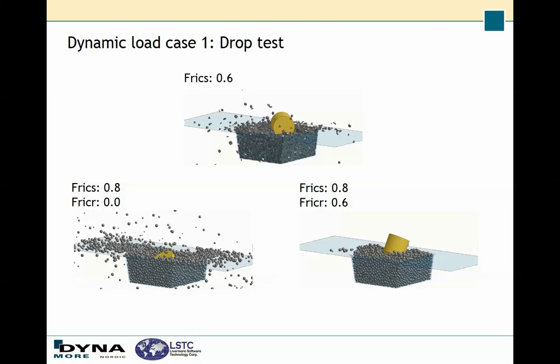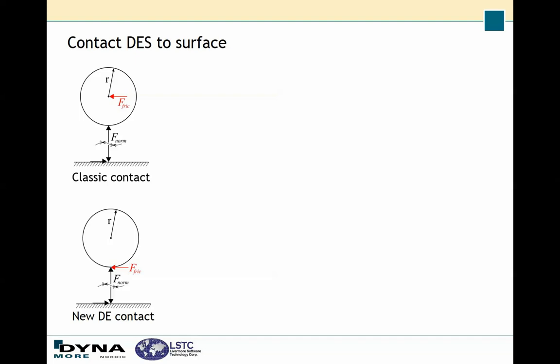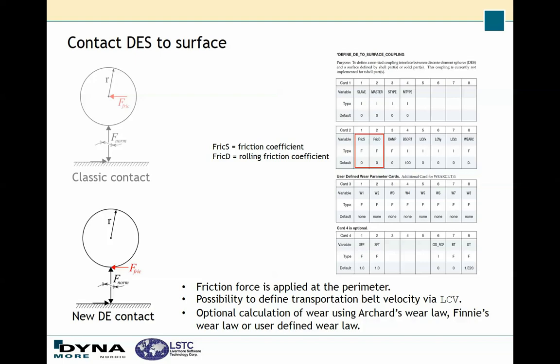Rolling friction is a way to compensate for the fact that real particles are not completely spherical. In the same way we need a special contact between the spherical particles and the surface. In the classical node-to-surface contact the friction force acts through the center of the particle, but with the new defined DE-to-surface coupling the friction force is instead applied at the perimeter. You set both a friction coefficient and a rolling friction coefficient. This contact also includes the possibility to define transportation belts and do wear calculations.